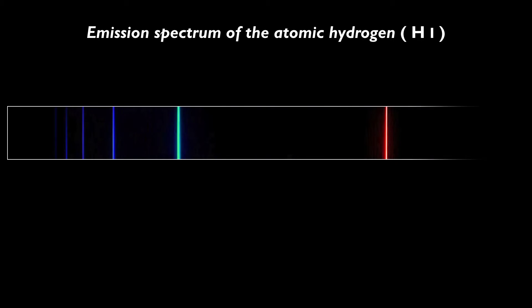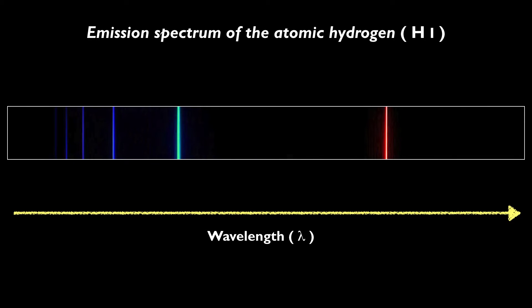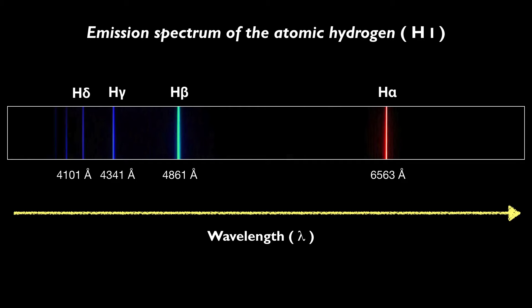This is the emission line spectrum of the hydrogen atom in visible light. In this representation, the wavelength increases from left to right. Left has the bluer colors, with short wavelengths, high frequencies and energies. Right has the red colors, with long wavelengths and low frequencies and energies. We write atomic hydrogen as H I, with I as a Roman numeral. The main emission lines of H I are H-alpha at 6563 Angstroms, H-beta at 4861 Angstroms, H-gamma at 4341 Angstroms, and H-delta at 4101 Angstroms. There are many more lines, of course.